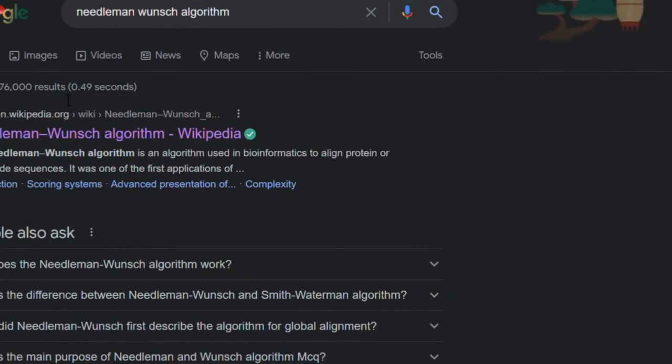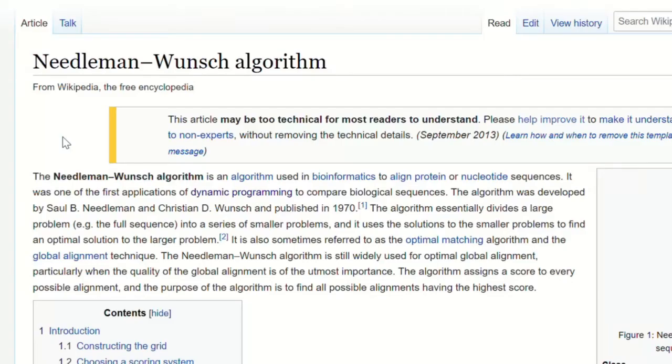For instance, we have the Needleman-Wunsch algorithm, a kind of dynamic programming used to efficiently compare DNA sequences.